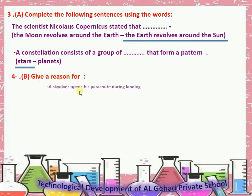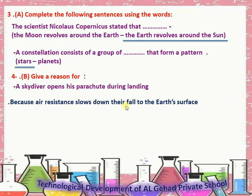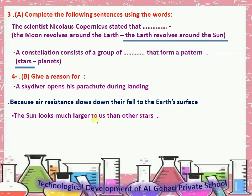Give a reason for. Number 1: A skydiver opens his parachute during landing. Because air resistance slows down their fall to the earth's surface. Number 2: The sun looks much larger to us than other stars. Because it is the nearest star to us.